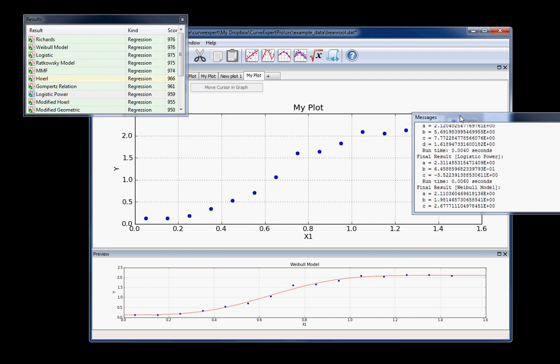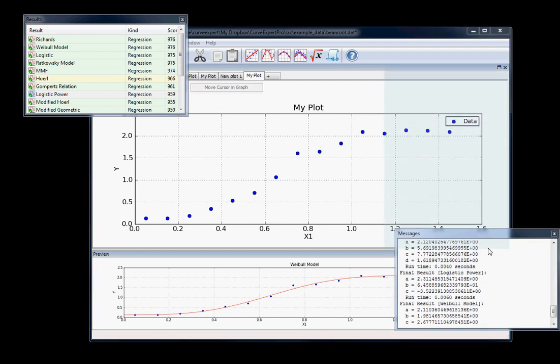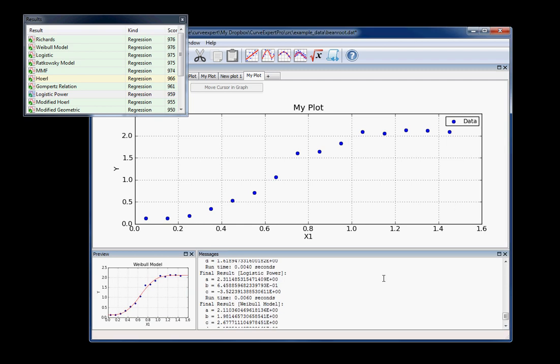Then when you'd like to snap them back in, you can either select window, dock all, or you can just drag them back and you'll see the little highlight which is telling you where the dock is going to happen.